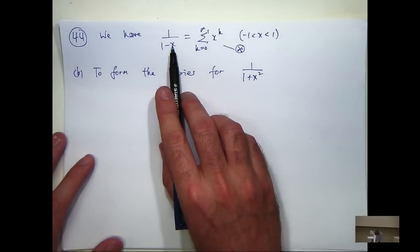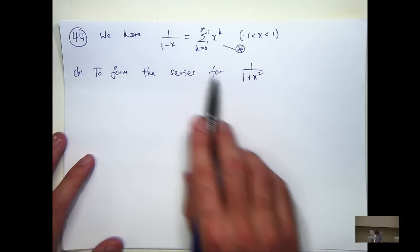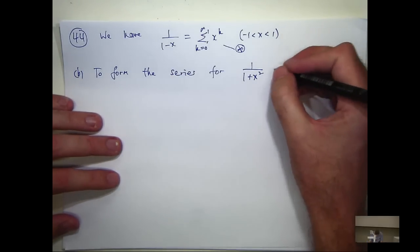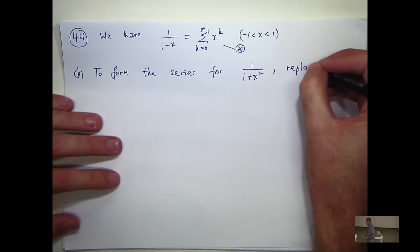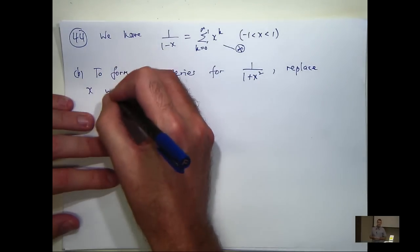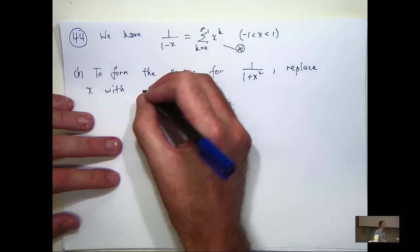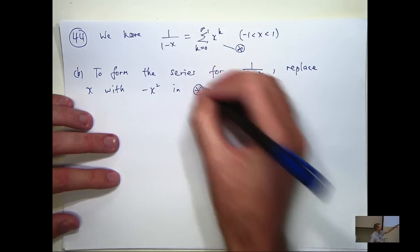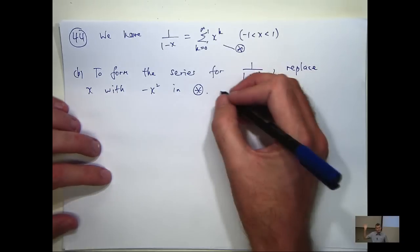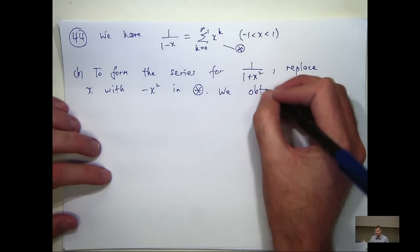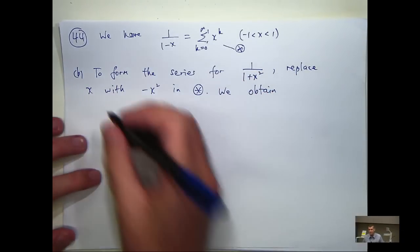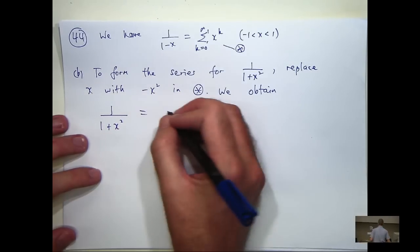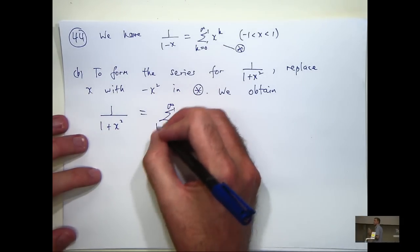Yeah, substitution. So what we could do up here is replace x with minus x squared, right? So, alright, so we're going to obtain the following. So the left-hand side is going to become one on one plus x squared.